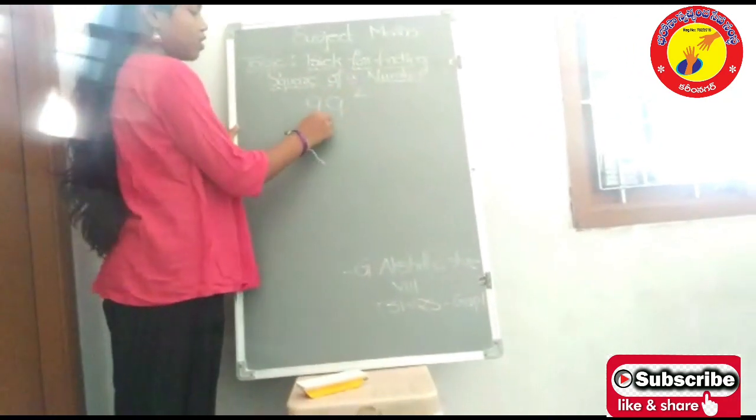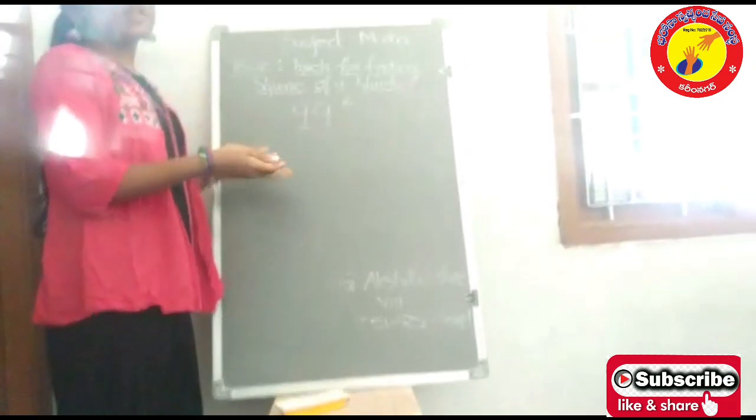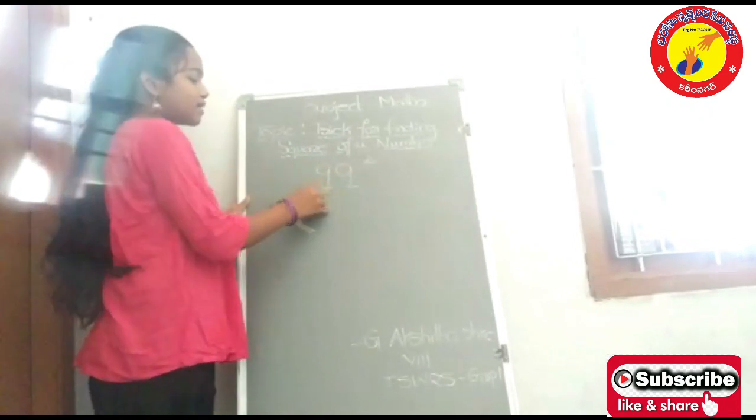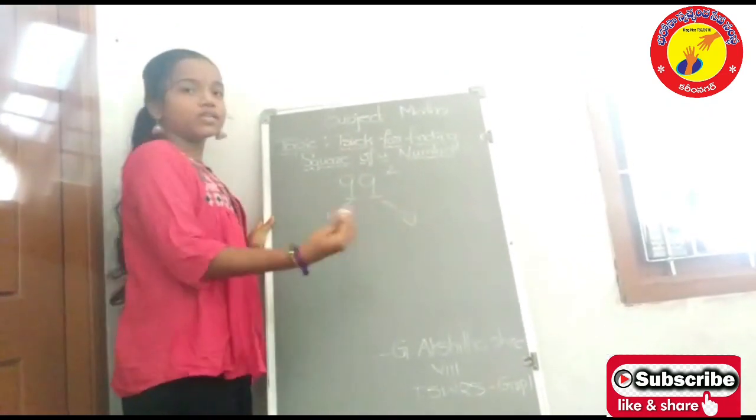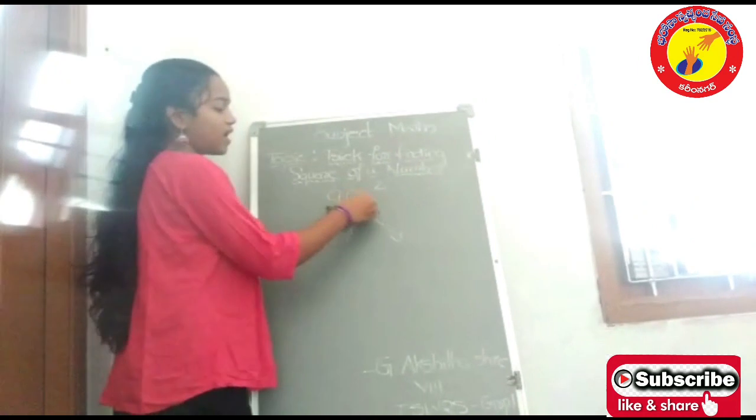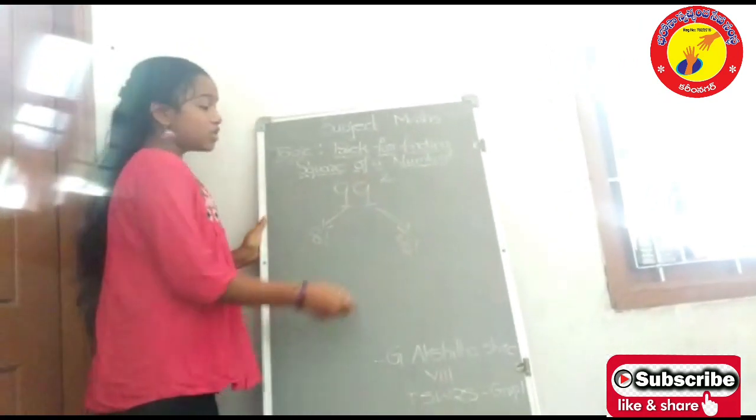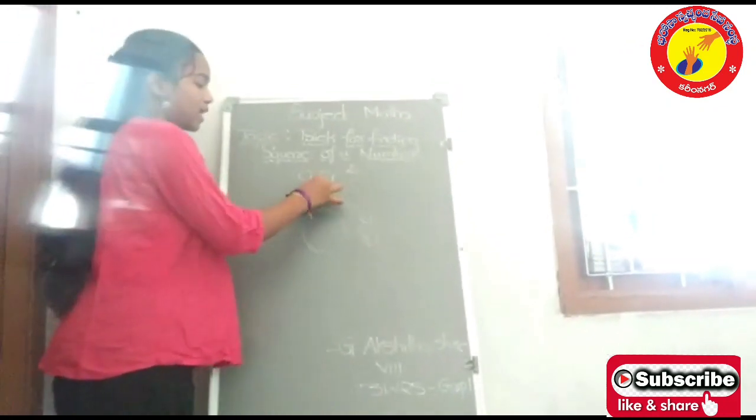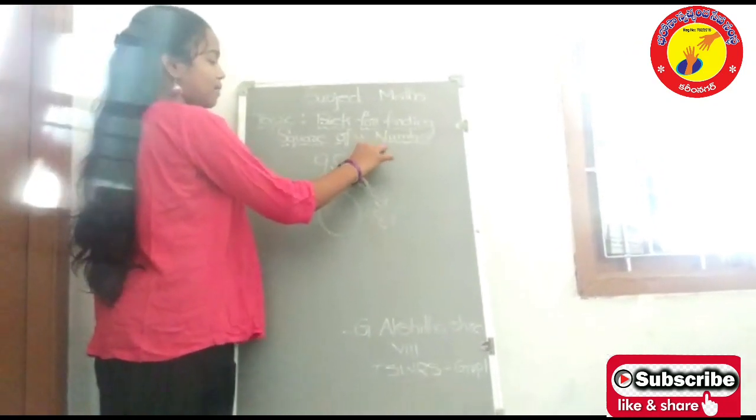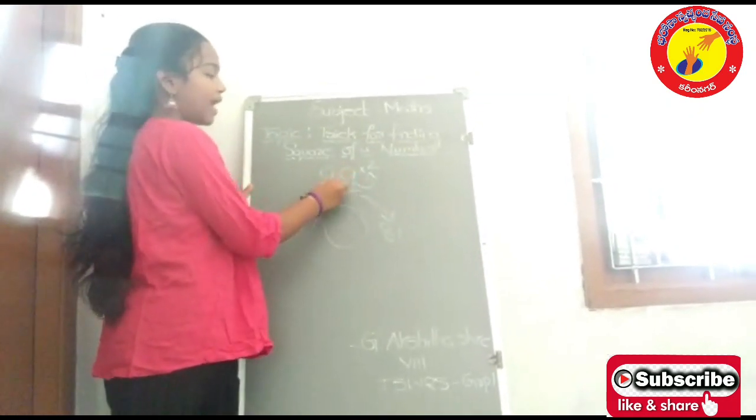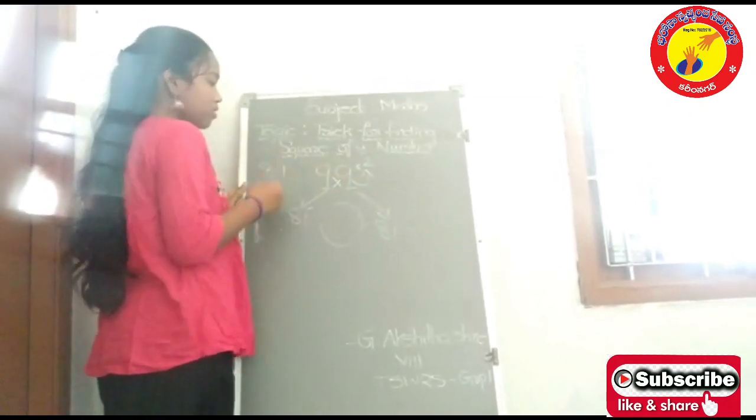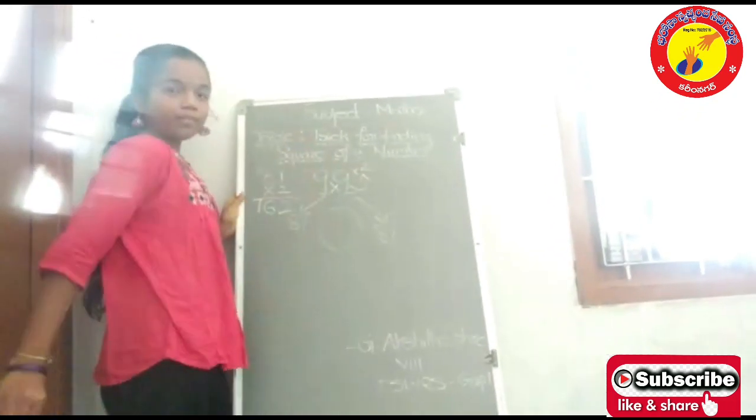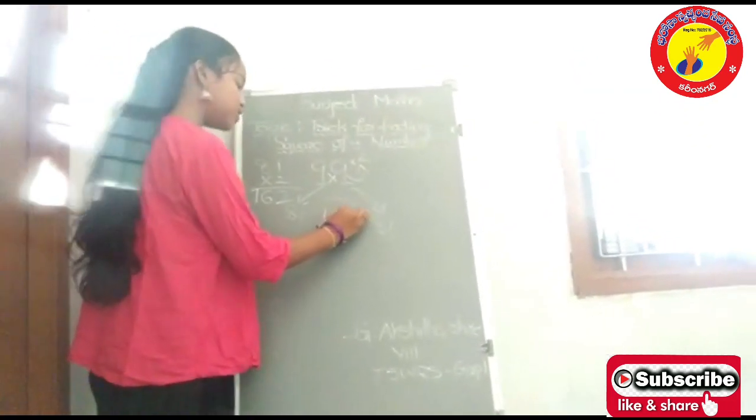99 squared. That is nothing new we do in this process. Find the square of these two numbers, both the numbers and write it in the both corners. 9 squared is 81 and 9 squared is 81. The middle number which we have to get is, multiply both the numbers and multiply them by 2 also. 9 times 9 is 81. 81 into 2 is 162. Place 162 in the middle.